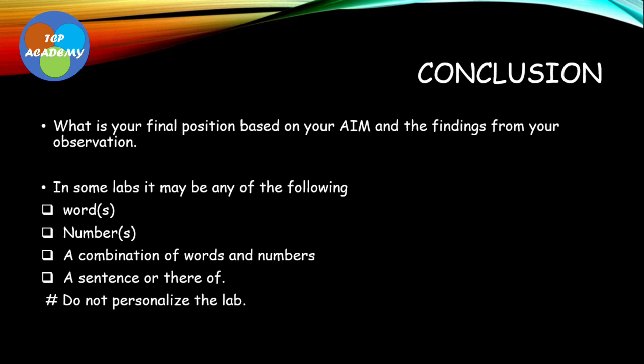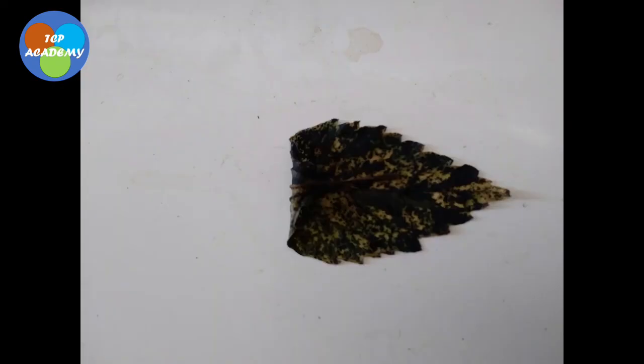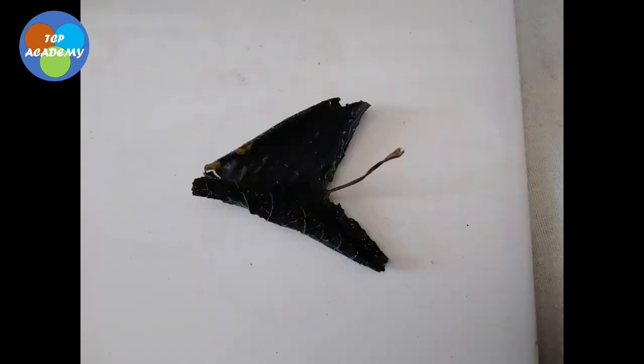If you wanted to find out the number of persons moving through Half Way Tree between nine o'clock and ten o'clock and it is fifty thousand, the conclusion is 'fifty thousand persons passed through Half Way Tree during that time.' That's what you found out. You don't need to write 'I have found out'—don't personalize the lab. Try not to personalize your lab. Thanks for watching, and if you found this helpful, please remember to like, share, and subscribe, and check out our other publications.